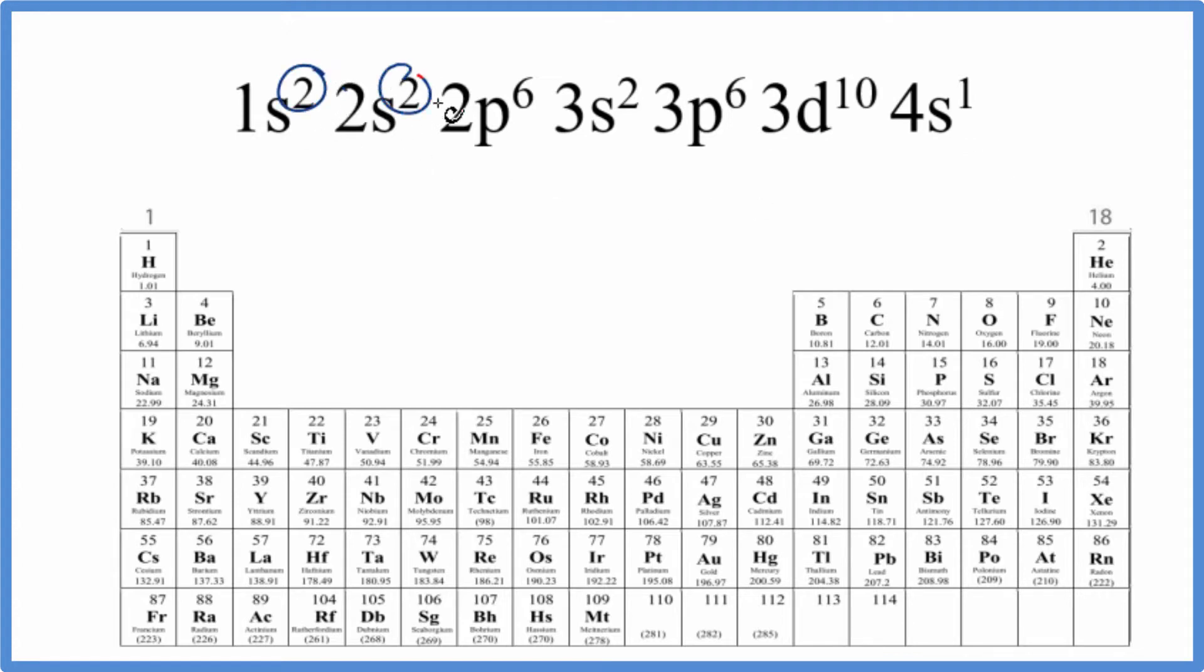The first thing, we could just count up all of these electrons. So when we do that, we end up with 29 total electrons here in this configuration.